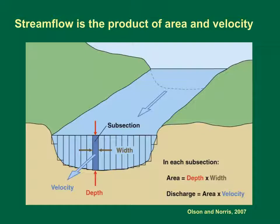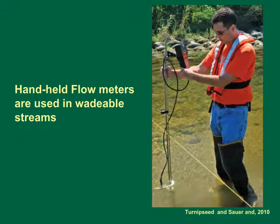The total streamflow is the area-weighted sum of the sections. This picture shows a hydrographer making discharge measurements in a wadeable stream. The yellow line is a tape stretched across the stream to keep the readings aligned and to demarcate the different measurement sections. A spinning propeller or an acoustic sensor is used to measure flow manually in each section.